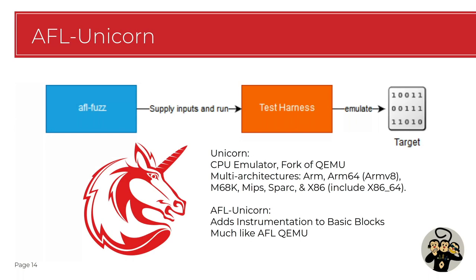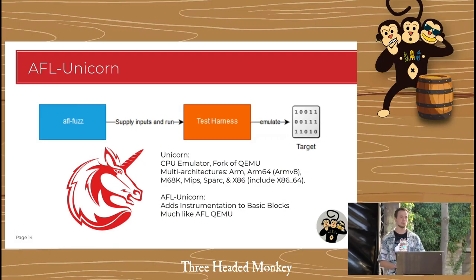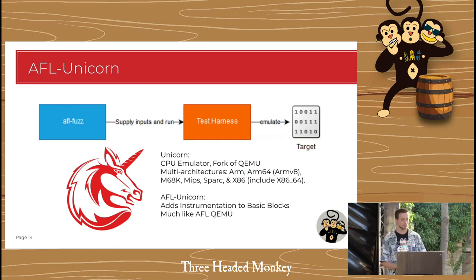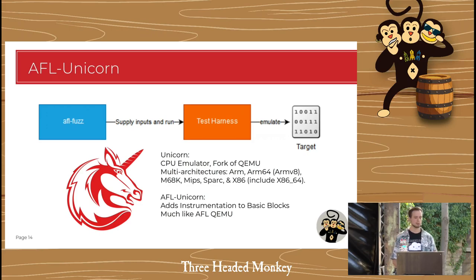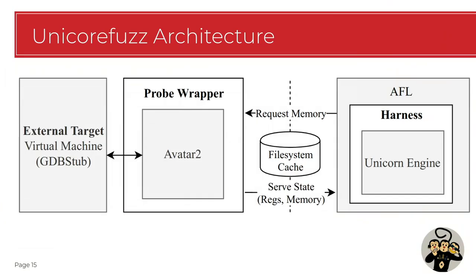Along comes AFL Unicorn by Nathan Foss. It takes input, drops it in a test harness, and fuzzes it. It uses Unicorn underneath - Unicorn is a fork of QEMU that can be used in a Python script and can emulate a multitude of architectures, basically almost everything QEMU can do. AFL Unicorn adds instrumentation on top of Unicorn - every time QEMU does block-for-block translation and a new block gets translated, that jump becomes part of the coverage. It says 'I found a new block here, this is interesting for the fuzzer, let's fuzz from there next time.'